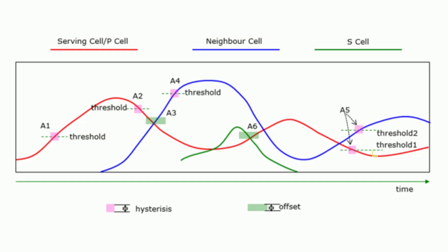Event B1. Used in inter-technology handovers, inter-RAT. Triggered when an inter-RAT neighbor cell's signal surpasses a predefined threshold, indicating favorable conditions for a potential handover.